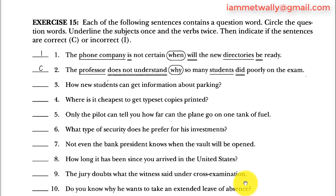This skill is a bit easier than before. You just have to determine whether the question word is acting as a true question word or a connecting word. If it's a question word, invert the subject and verb; if it's a connector, keep normal sentence order. I hope you liked it — keep practicing, take care, and until I see you in another skill, goodbye.